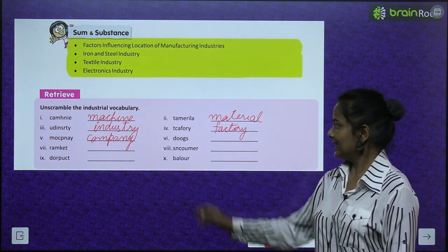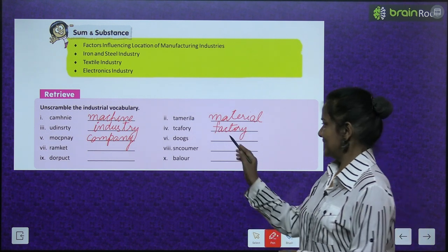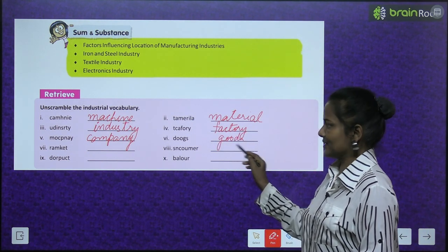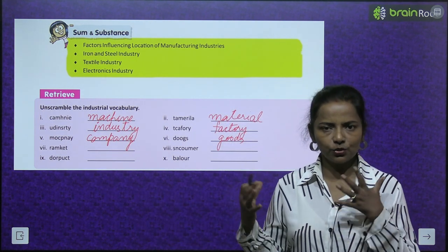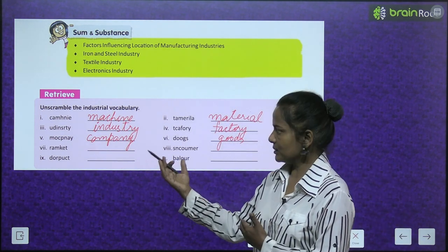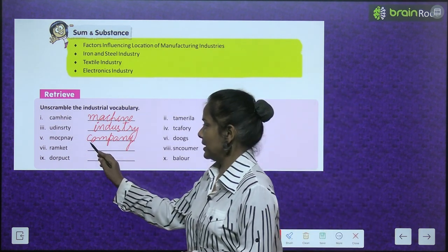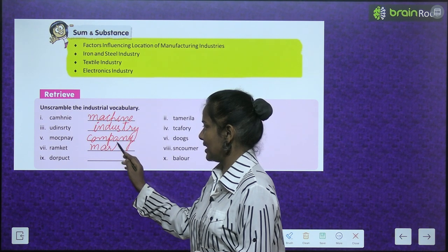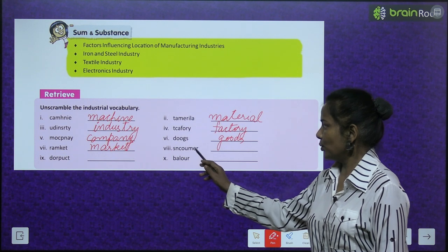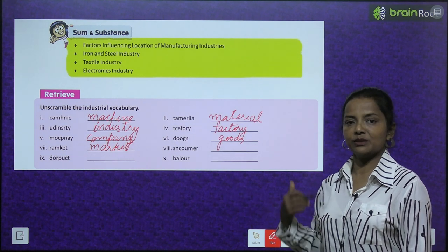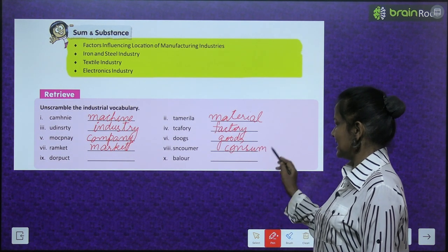Isn't it interesting? D-O-O-G-S — goods, G-O-O-D-S. R-A-M-K-E-T — can you recall a similar word? I'm able to recollect it — M-A-R-K-E-T, market. S-N-C-O-U-M-E-R — this becomes consumer, C-O-N-S-U-M-E-R.